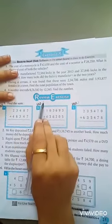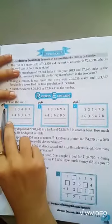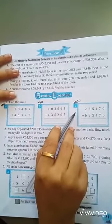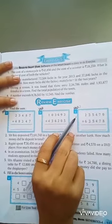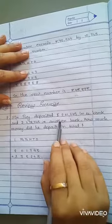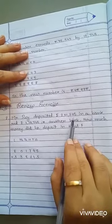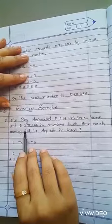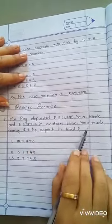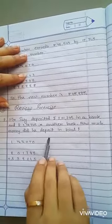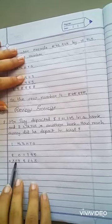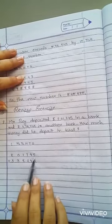Lesson number two, review exercise. Question first, find the sum in which a, b, and c is in homework. Question second: Mr. Roy deposited rupees 2 lakh 1745 in a bank and rupees 3 lakh 38,745 in another bank. How much money did he deposit in total? First, write down place value. Now, 2,01,745 rupees.